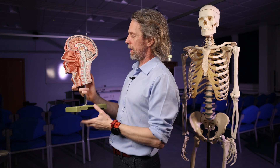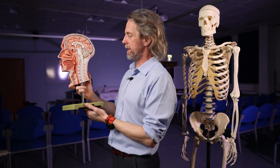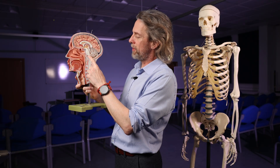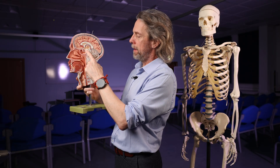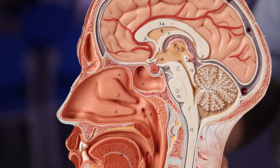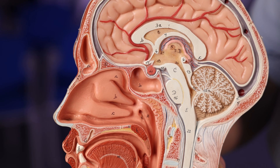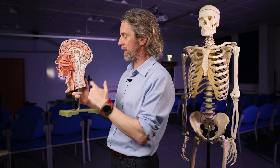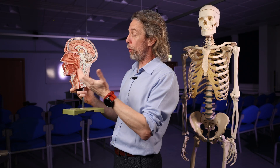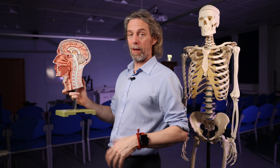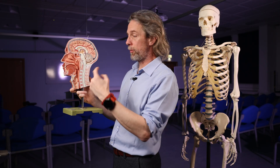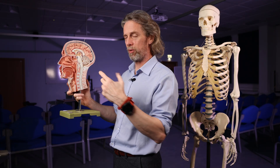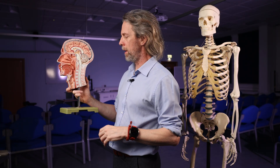The cisterns are these fluid-filled spaces. They're often named by the bits of the brain that they are next to, which is very helpful — much of the time that helps us remember their names. Also, looking at the cisterns helps us better understand the structures of the brain in three dimensions, which is kind of difficult to get to grips with.